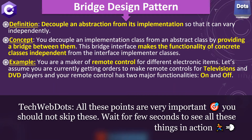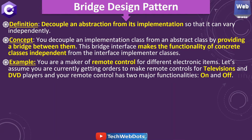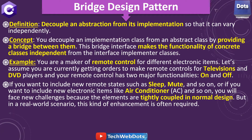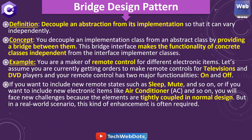Let's take a real-world example. Assume you are a maker of remote controls for different electronic items — currently getting orders for televisions and DVD players. Your remote control has two major functionalities: on and off. If you want to include new remote states such as sleep or mute, or new electronics like air conditioners, you will face new challenges because the elements are tightly coupled in a normal design.